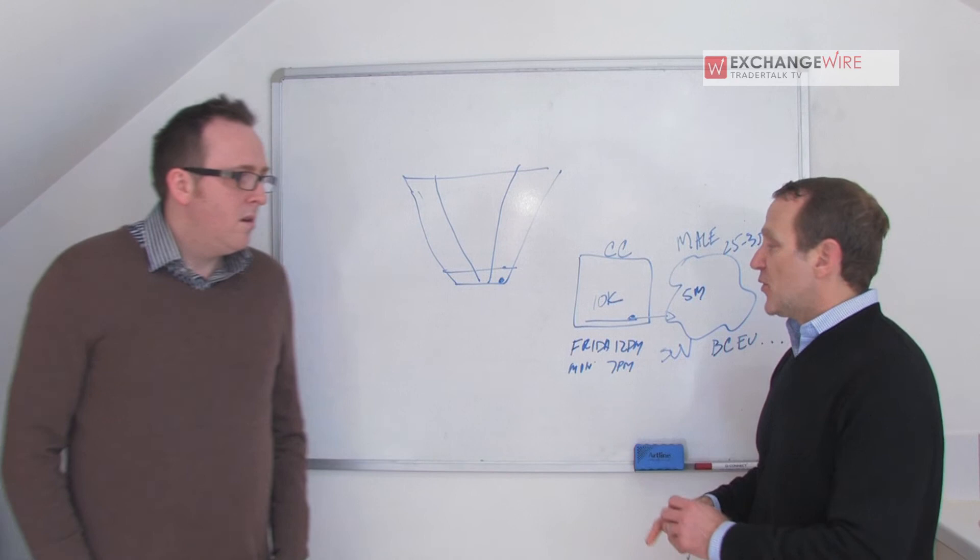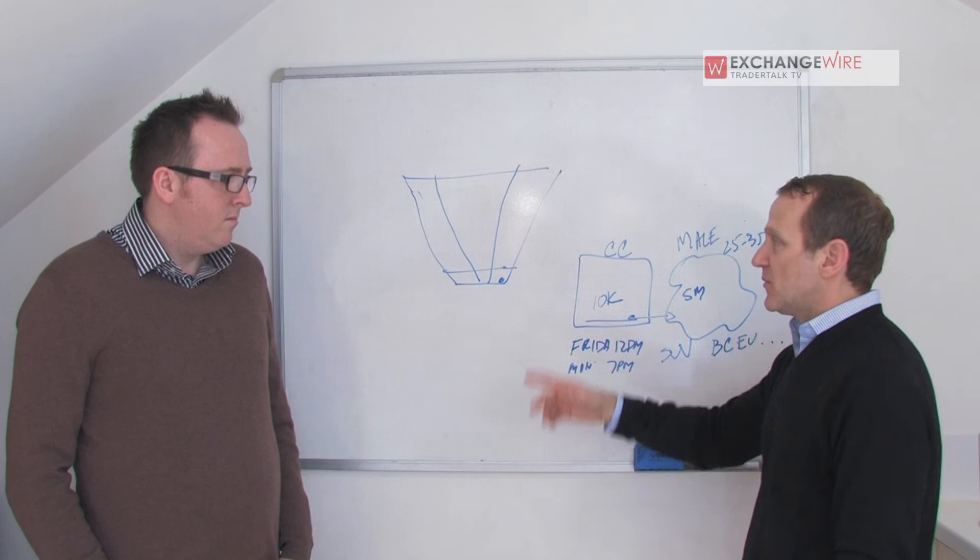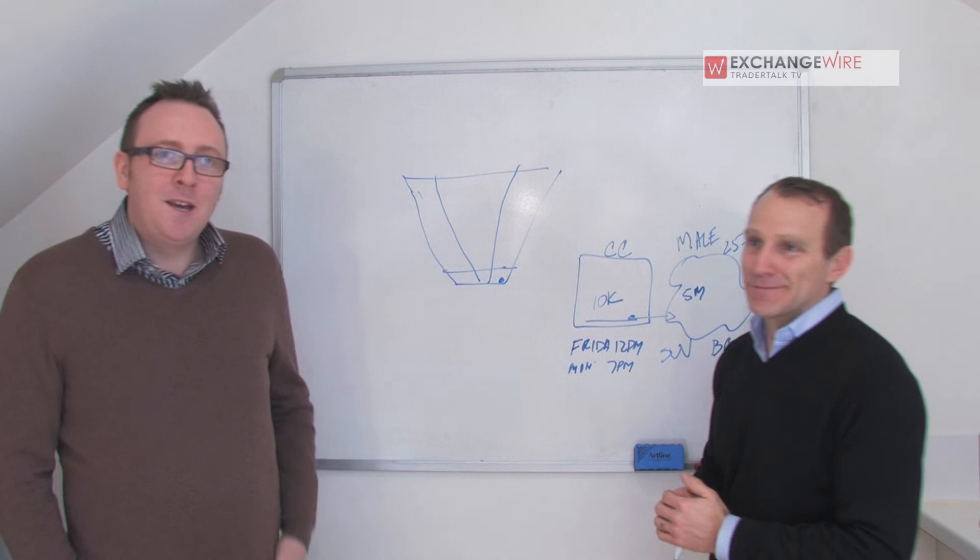So again, as the model changes, we're scoring cookies in different ways and pushing them out in real time. So that the model's actually adapting, something we call adaptive audience intelligence. Okay. So is this, is this available at the minute? Is this technology? Yes. Okay. Yeah. So if you have your DSP, you can tap into that.